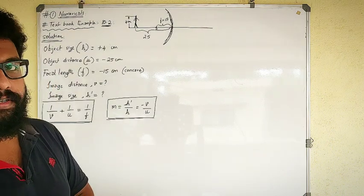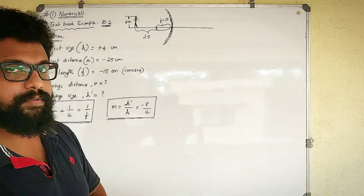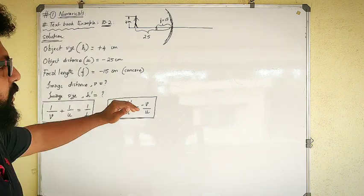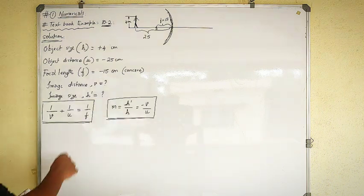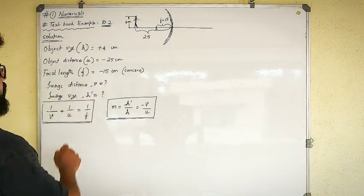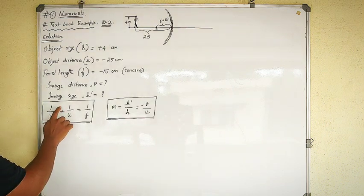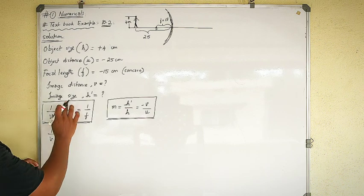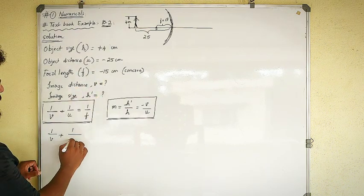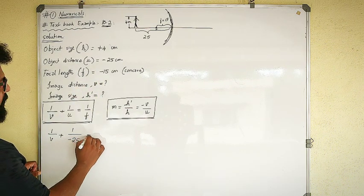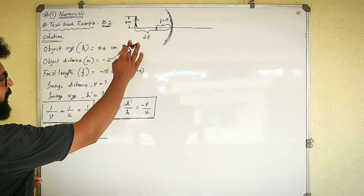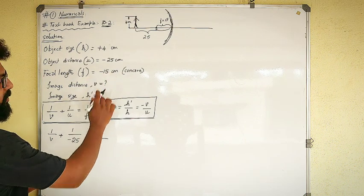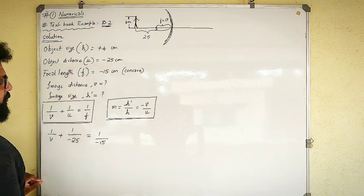To find the nature of the image, we will use the magnification concept from the previous video. First, let us find the image distance V using the mirror formula: 1/V + 1/U = 1/F. I don't know V, so I keep it as is. U is minus 25 cm, and F is minus 15 cm according to the sign convention.